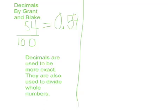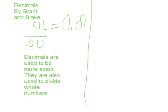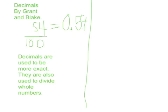Decimals by Grant and Blake. 54 hundredths in fractions equals 54 hundredths in decimals. Decimals are used to be more exact. They are also used to divide whole numbers.